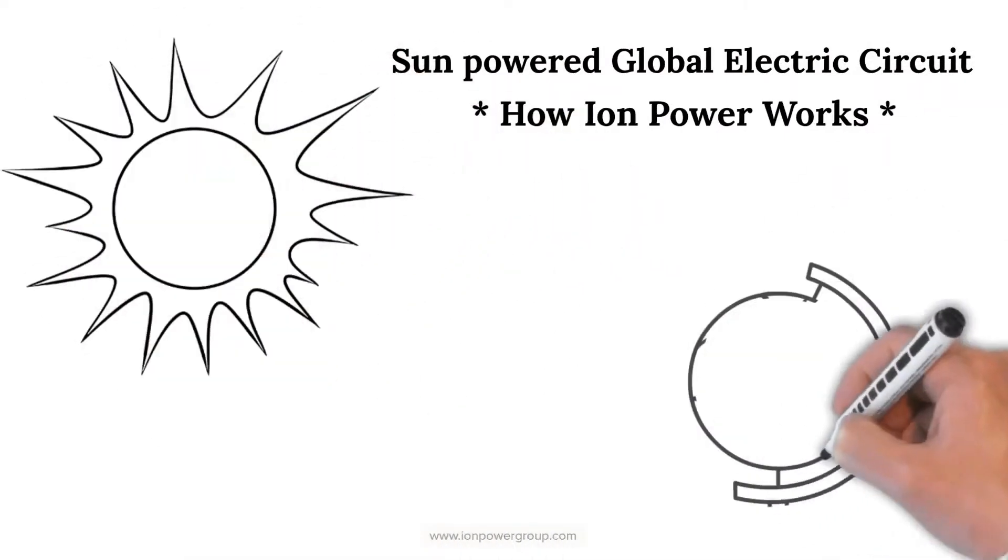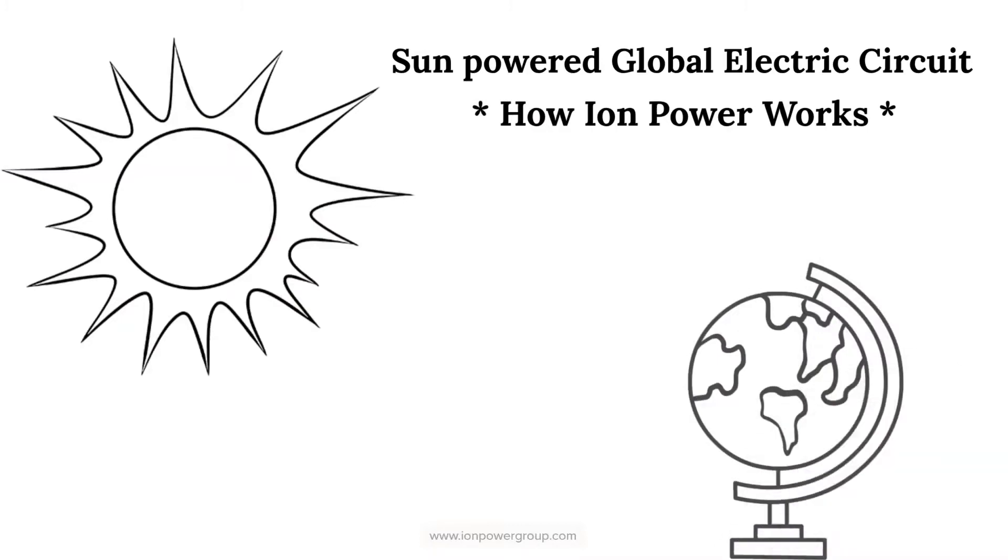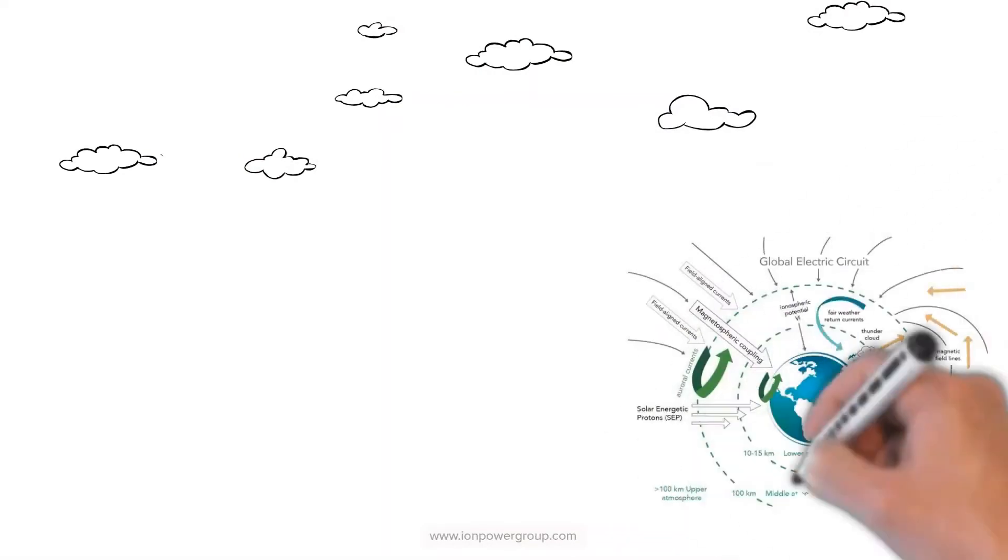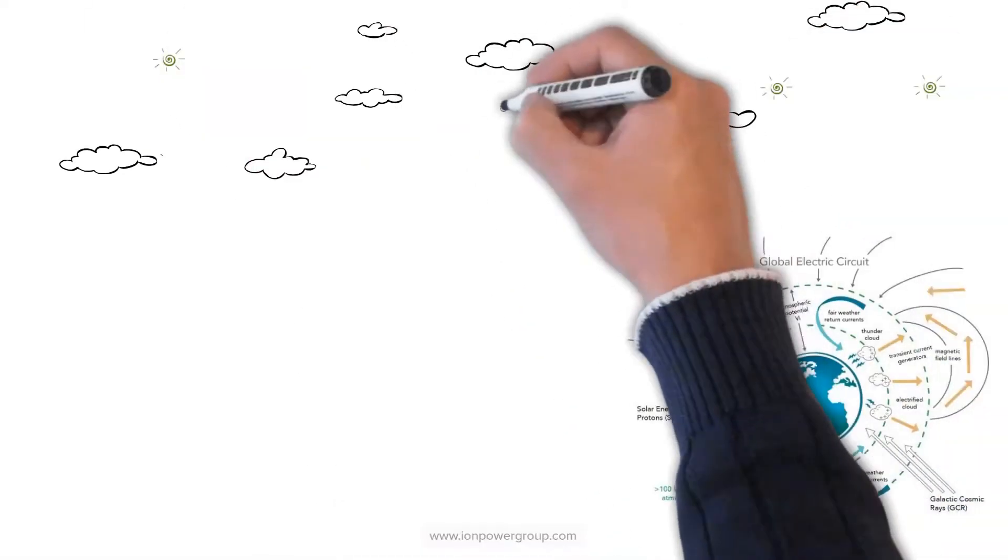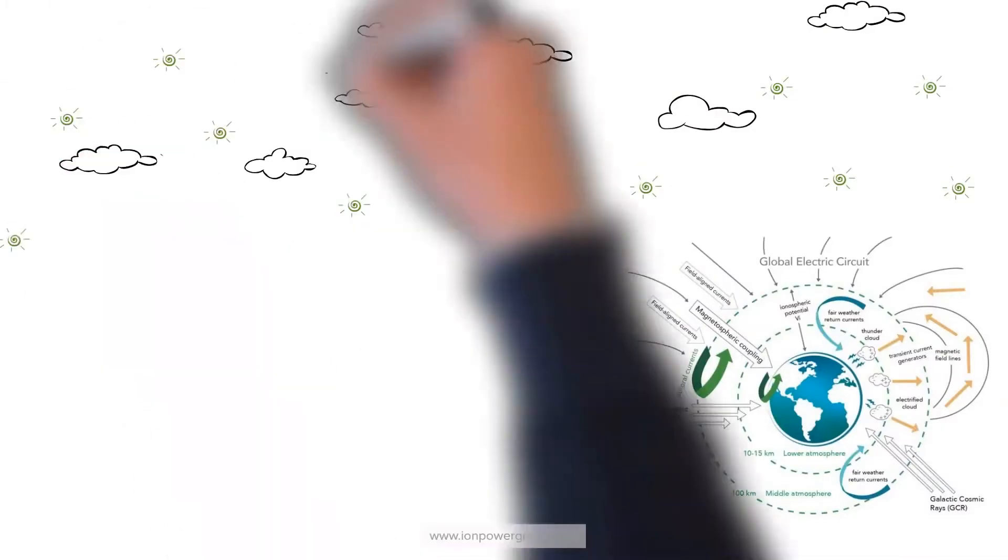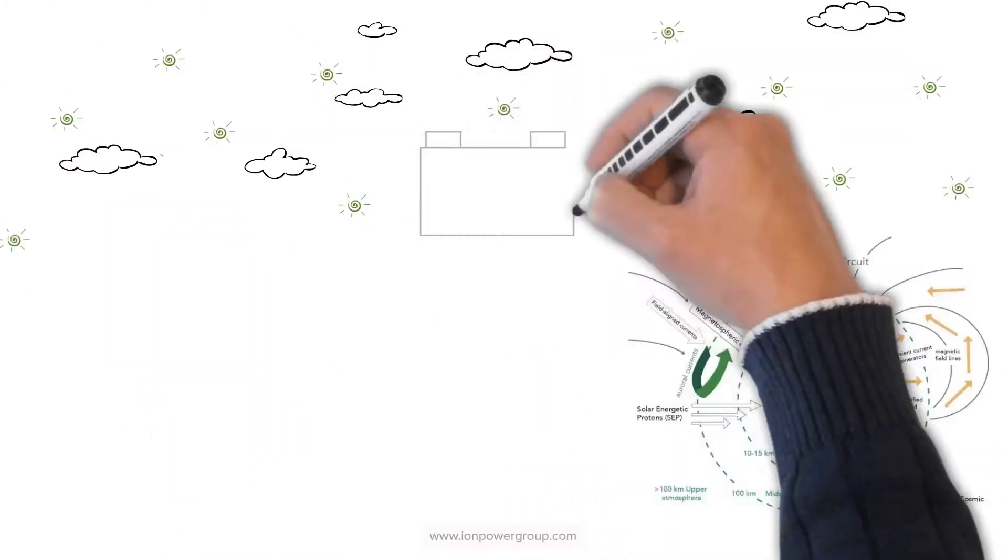The Sun bombards the Earth with quadrillions of watts of continuous energy. The Sun's energy powers the Earth's global electric circuit that manifests trillions of ions throughout the atmosphere, making it a natural source of clean electricity.